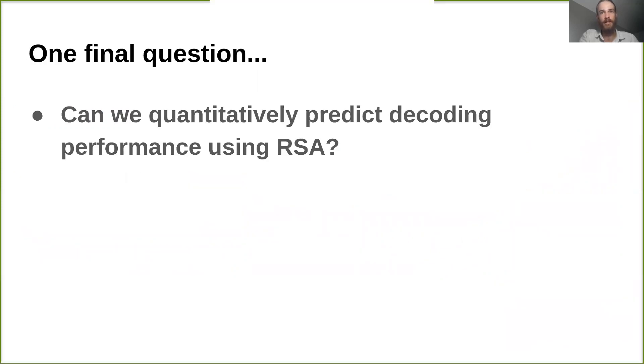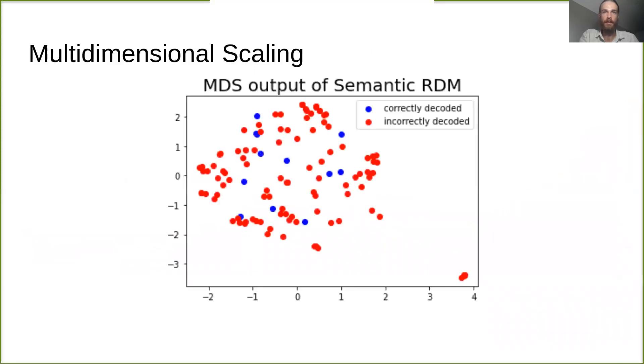Finally, to determine whether we could actually predict decoding model performance using RSA, we applied multidimensional scaling to the RDMs for our features, revealing the clusters and dissimilarities between the stimuli. The results of our poorly performing semantic feature set show no clear distinction between correctly and incorrectly decoded images.